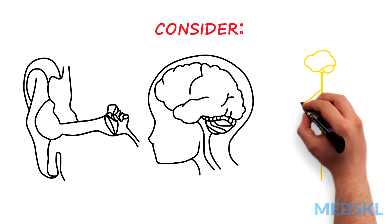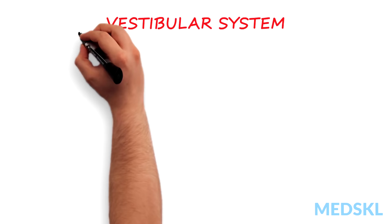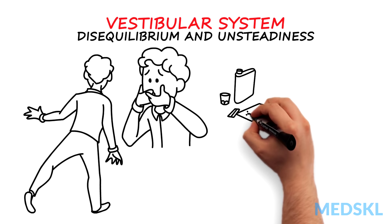We need to consider problems that affect the vestibular system, the cerebellum and proprioceptive pathways. Problems with the vestibular system cause disequilibrium and unsteadiness. If the problem is unilateral, the patient develops profound vertigo with associated nausea and vomiting.